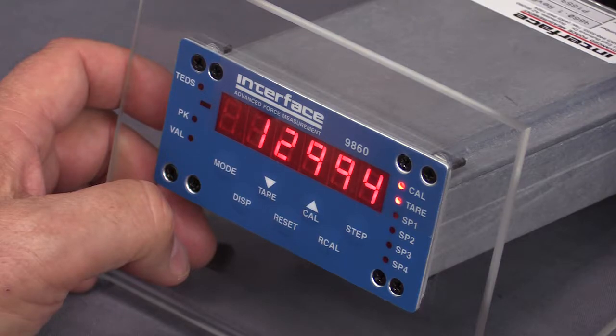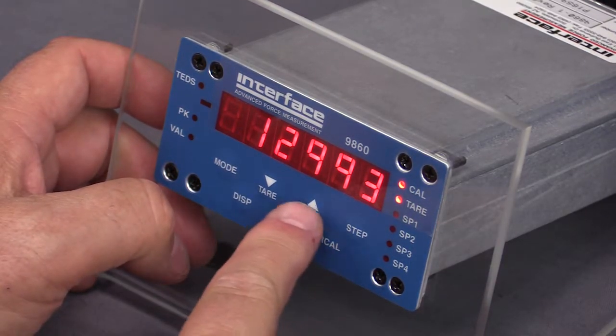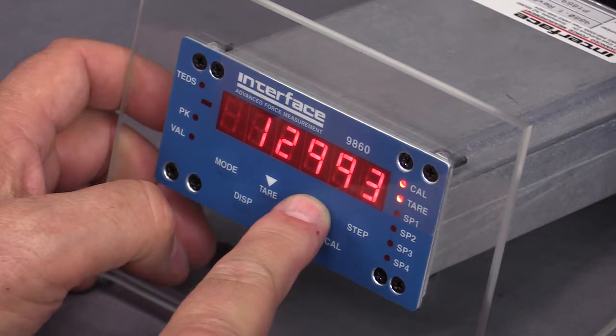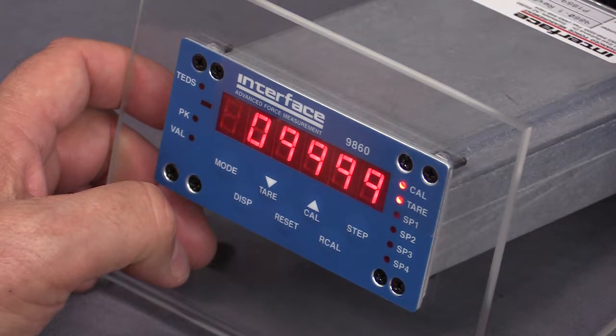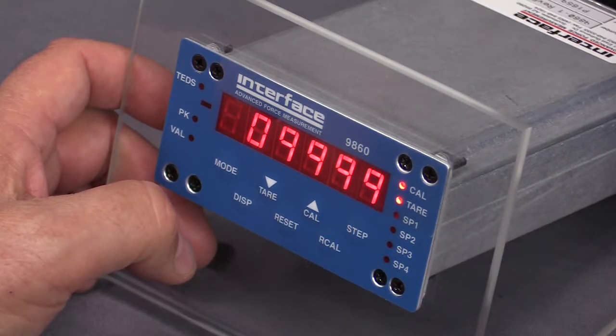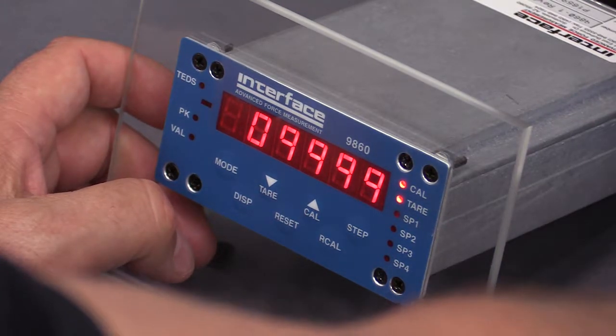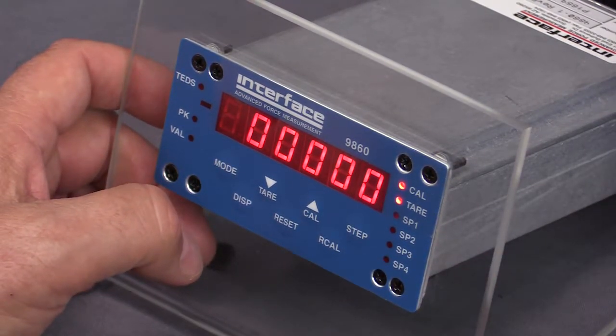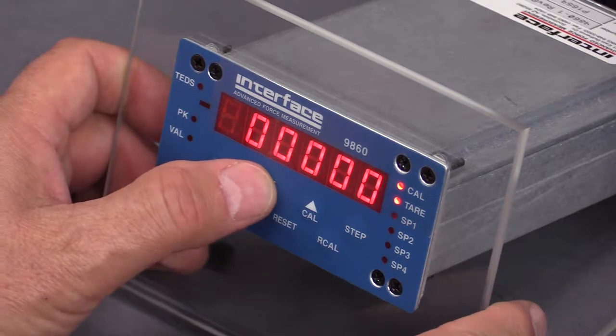We're putting on a load of two millivolt per volt, simulating that for a load cell. And now I'm going to hit the cal. When I do that, it captures that reading, so the two millivolt per volt now is associated with our full scale. I'm going to turn this back. Calibration is now complete. We're going to tear the unit.